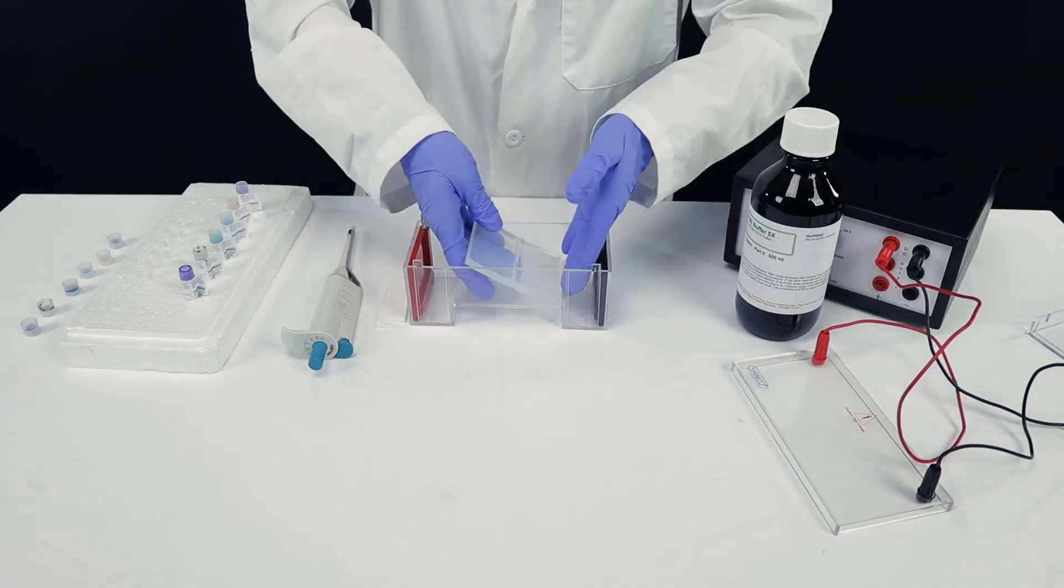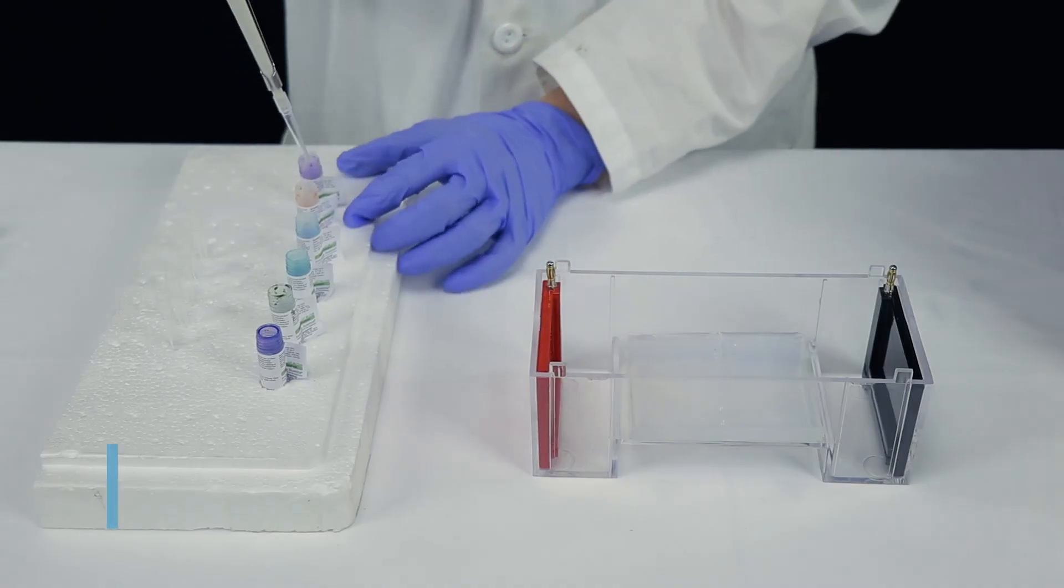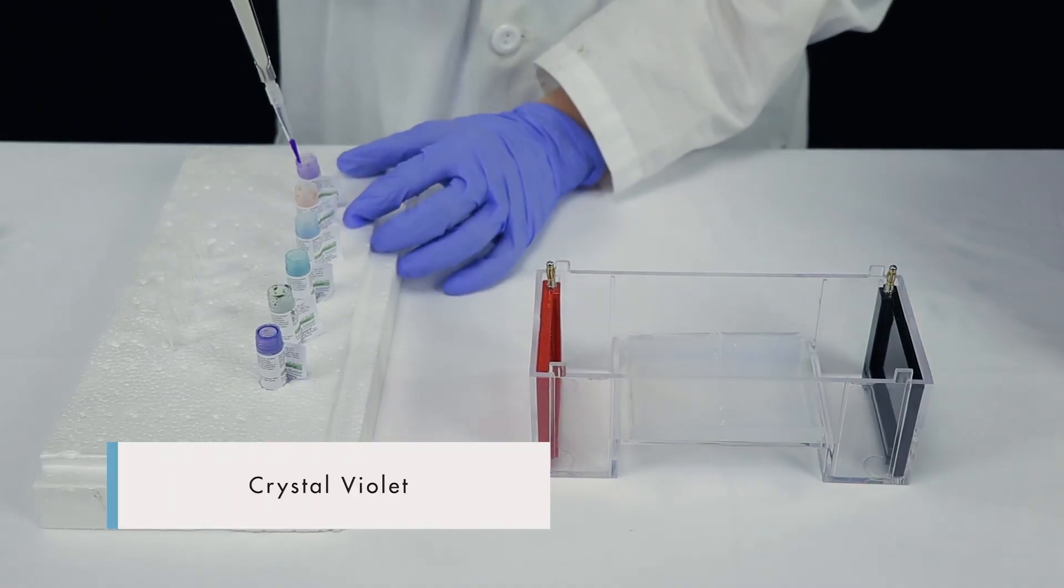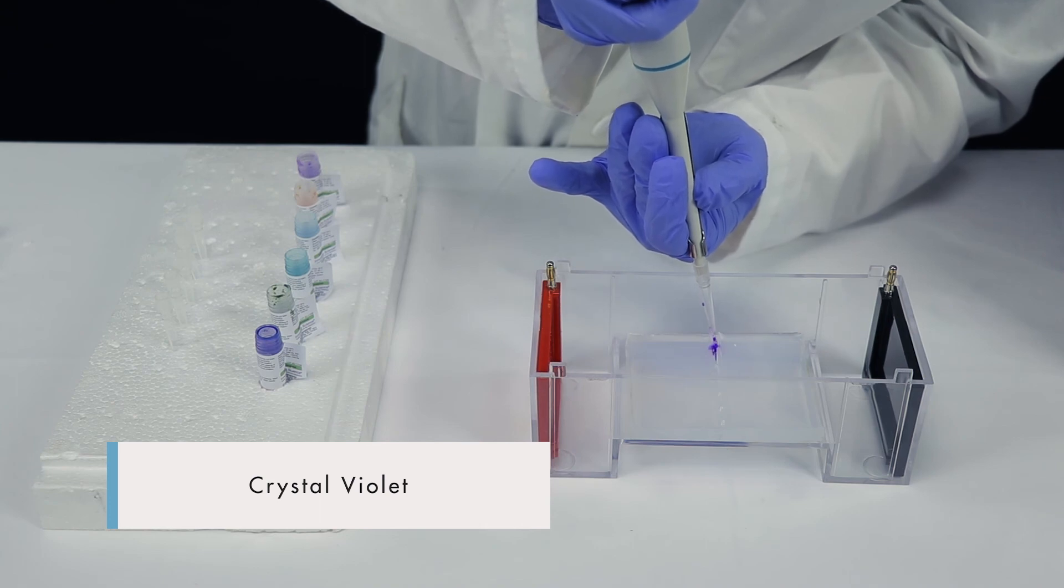First, place the prepared gel into the tank. Then, use a micropipette to fill each well with a separate dye. Be sure to change the tip for each dye.